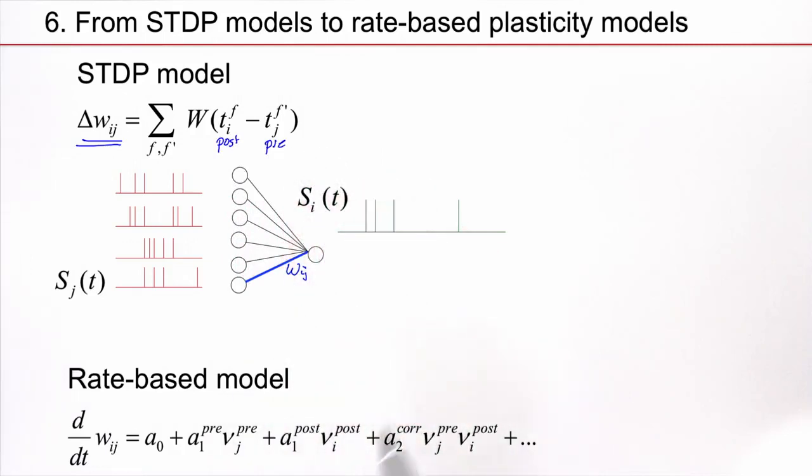So if you take a postsynaptic spike, then we can center this function at the postsynaptic spike time. And I have here the part pre-before-post. And then I have a part post-before-pre. And this function is this STDP window or learning window, W of t_i^f minus t_j^f'. So this is spike-based plasticity.